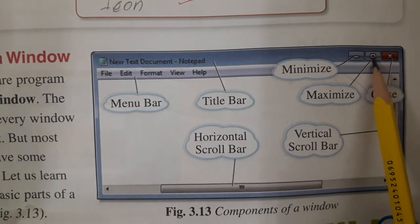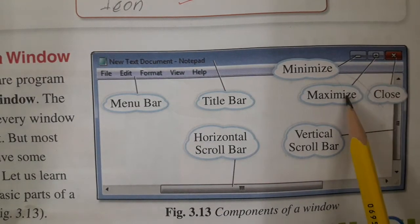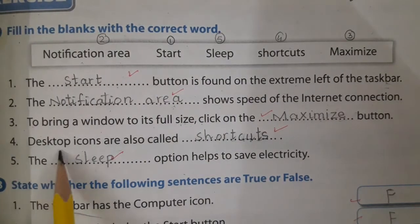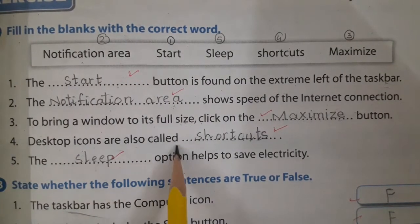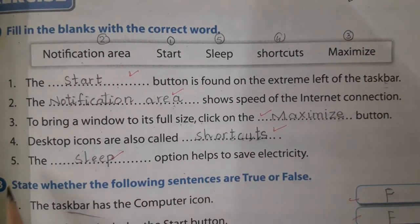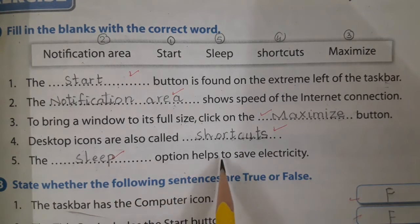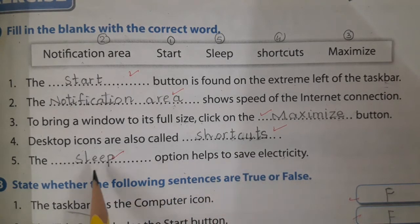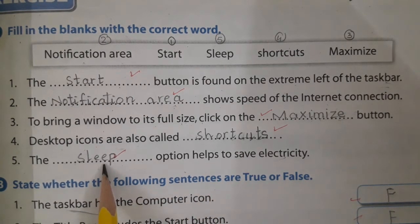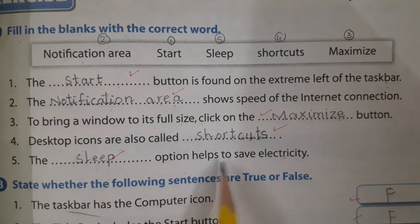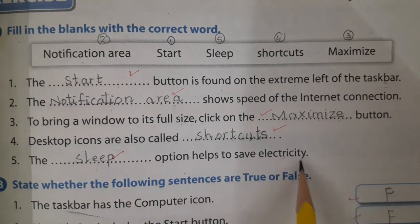This is the maximize button. Number four: desktop icons are also called shortcuts. Number five: the sleep option helps to save electricity.